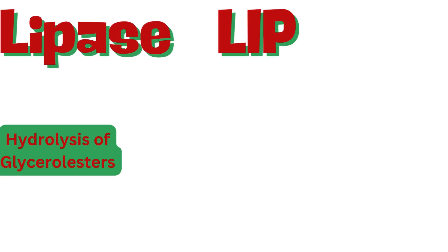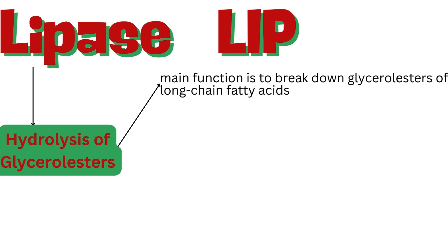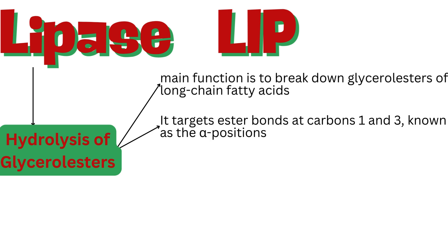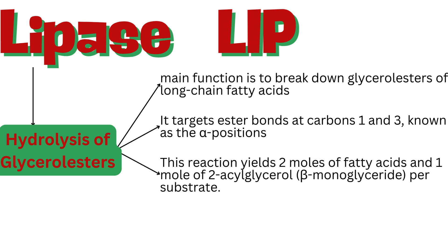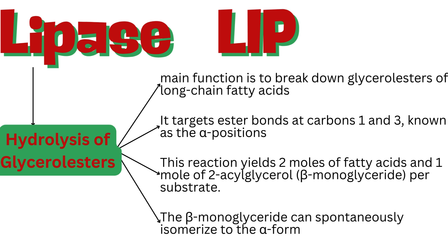Lipase's main function is to break down glycerolesters of long-chain fatty acids. It targets ester bonds at carbons 1 and 3, known as the alpha positions. This reaction yields 2 moles of fatty acids and 1 mole of 2-acylglycerol (beta-monoglyceride) per substrate. The beta-monoglyceride can spontaneously isomerize to the alpha form, allowing further breakdown.